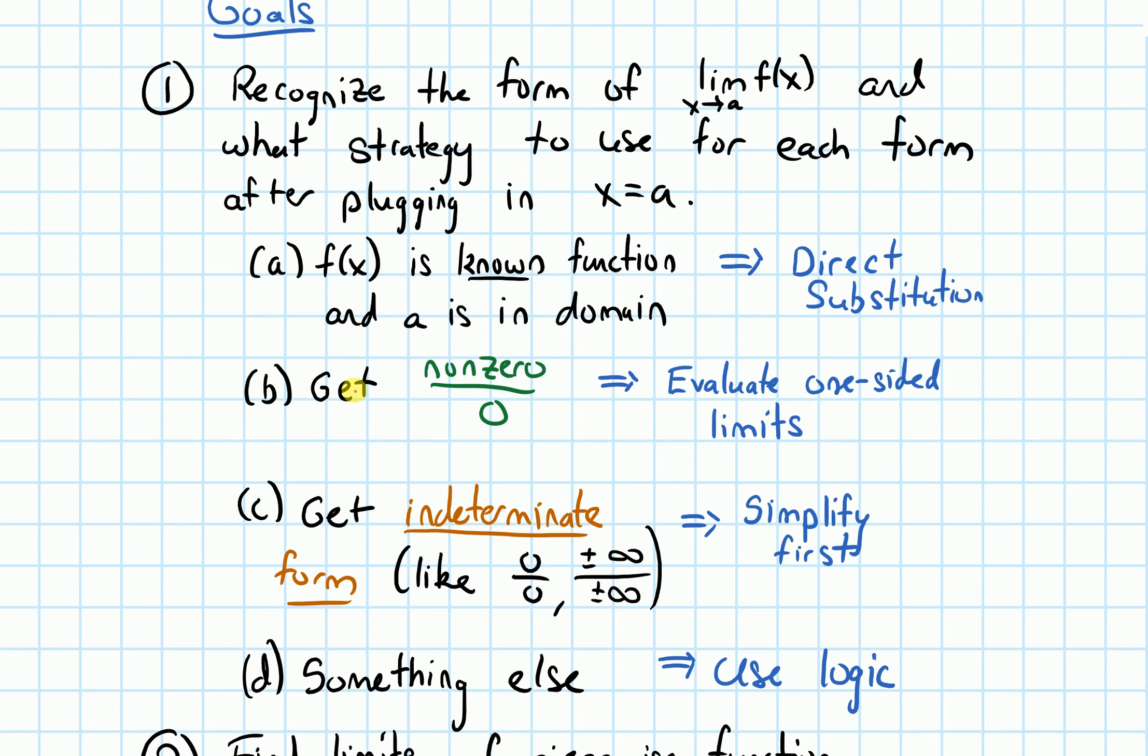The second case is when we plug in, if we end up with something of the form non-zero on top, zero on the bottom, and there we'll evaluate one-sided limits.